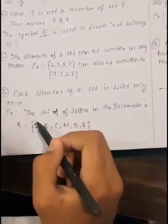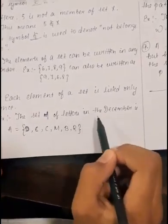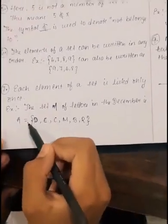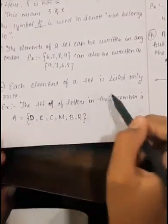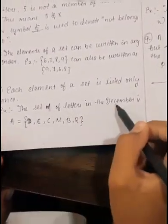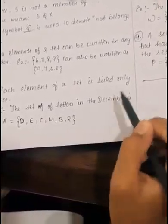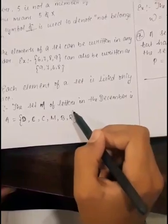For example, the set A of letters in the word December is A = {D, E, C, M, B, R}. E will not be written again, and the second E will not be written again.